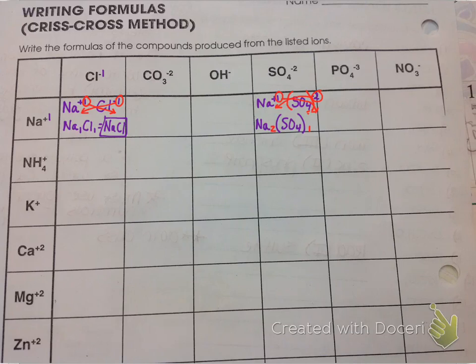And so notice the subscript inside the parentheses did not change. Sulfate is sulfate. You can't change that when you criss-cross. And so if you ended up with SO5 or SO6, you did something wrong. What's inside the parentheses should always stay the same.